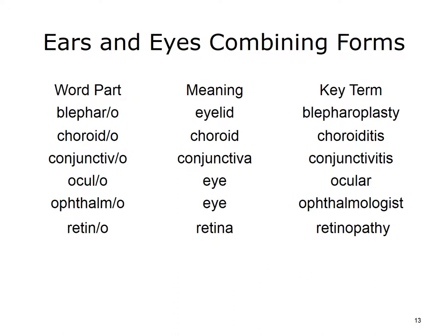Here are some key word parts related to the eyes and vision, along with their meanings. In the third column, you can see some of the medical terms that we can create by combining word parts. You should return to the online medical dictionary to hear the pronunciation and become familiar with the meaning of the created terms.